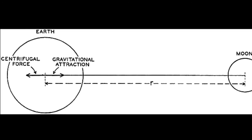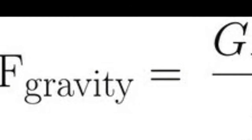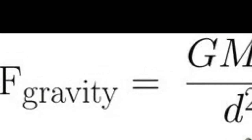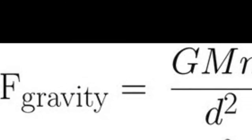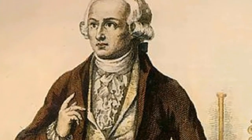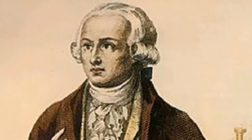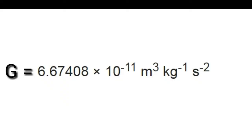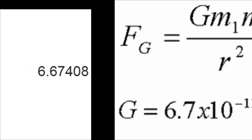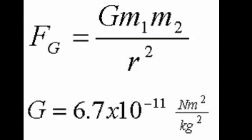To account for this, Newton added a universal constant with a very small value, naming it capital G. His equation became: gravitational force F equals G multiplied by the masses of both bodies divided by the square of the distance between them. Later, scientist Henry Cavendish experimentally determined the value of G as 6.67 × 10⁻¹¹ m³ per kg·s². Newton's complete equation then became: F = 6.67 × 10⁻¹¹ × m1·m2 / r².